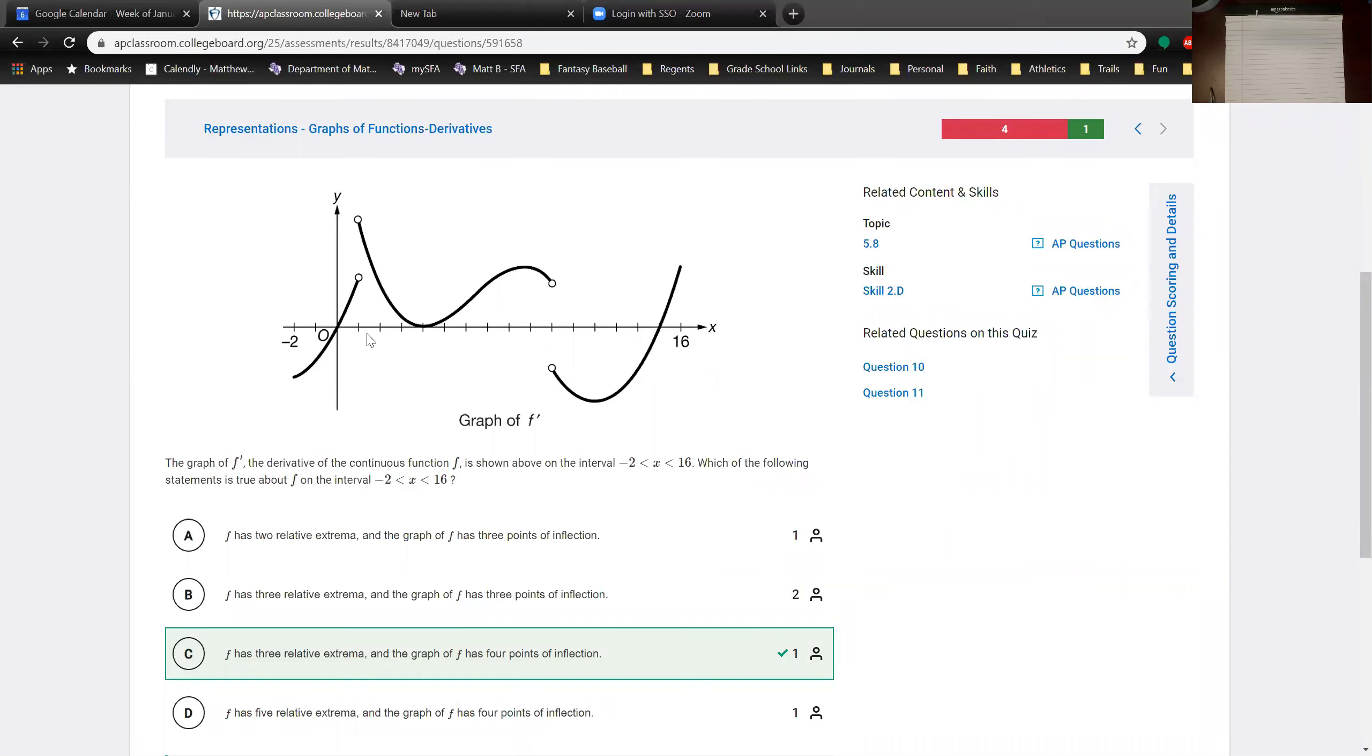So the first thing we want to look at is critical points for f. We're going to look at places where f prime doesn't exist or equals zero. So we see one at the origin and we see it goes from negative to positive, means decreasing to increasing. So that's a relative extrema.